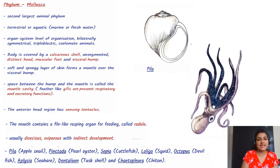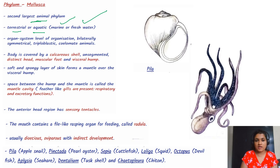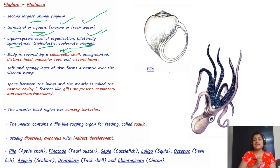Now we are coming to phylum Mollusca, which is the second largest phylum after Arthropoda. They can be terrestrial, marine, or freshwater. They have organ system level of organization, are bilaterally symmetrical, triploblastic, and the body is covered by a calcareous shell — unlike Arthropoda's chitinous exoskeleton.